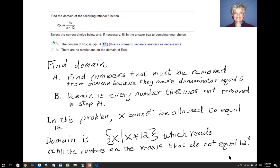All right, the next problem. Here we have negative 5x squared over x minus 4 times x plus 5. To find the numbers that have to be taken out of the domain, set each of these factors on the bottom equal to 0, and then solve.